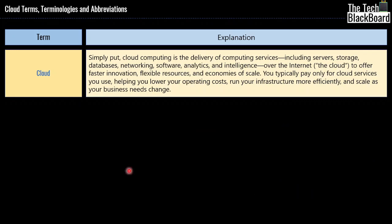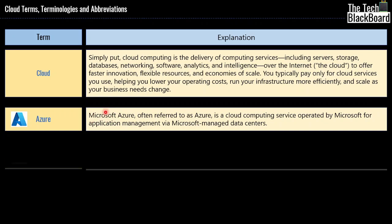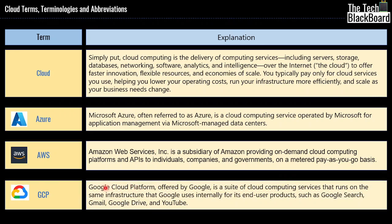Now that you understand what is cloud, let's see what are the three major cloud providers. The first one is Azure, from one of the biggest tech giants, Microsoft. The second one is AWS, also called Amazon Web Services — as the name suggests, it is from Amazon. The third biggest cloud provider is Google Cloud Platform, offered by Google. Most of the cloud terms we are looking at in this video are related to Azure, which is from Microsoft. However, many of the concepts also relate to AWS and GCP as well.